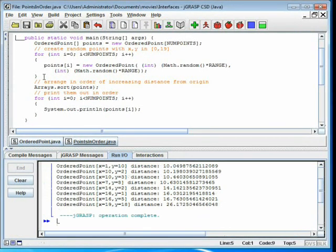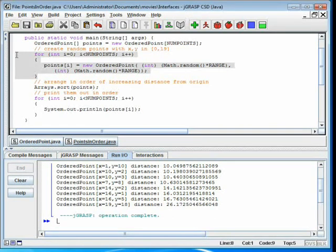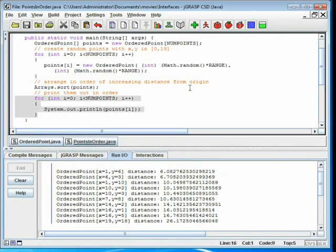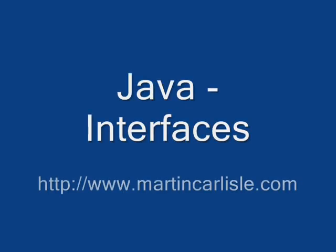Running the program, it generates 10 random points in the first quadrant with x and y coordinates from 0 to 19, sorts them in order of increasing distance from the origin, and prints them to system.out. You can download the source code for OrderedPoint and PointsInOrder from java.martincarlile.com.